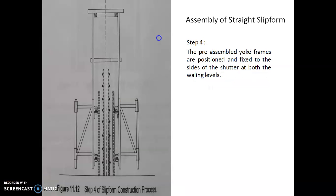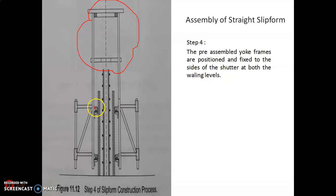In the fourth step, the pre-assembled yoke assembly — that is the pre-assembled yoke frames — are positioned and fixed to the sides of the shutters at the wailing level. That is the fourth step.